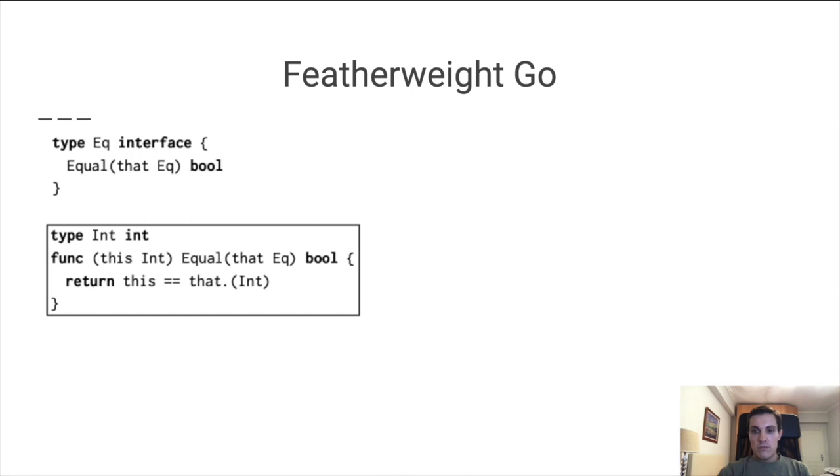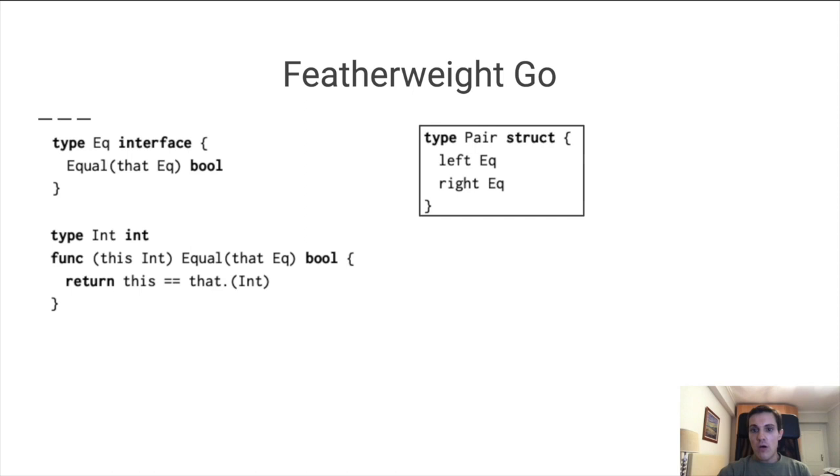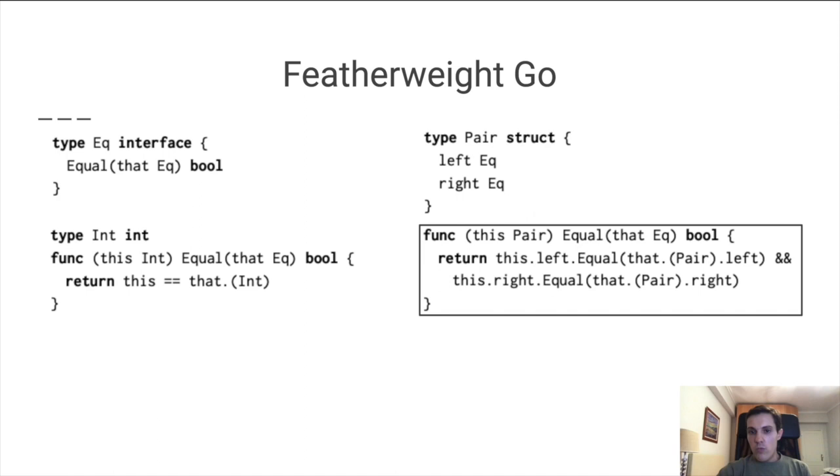We can also make new types have equality. For instance, we can define a pair type with a left and a right element. If we want to have an EQ on pair, we have the elements themselves implement EQ. Then we can define equality for pairs, the equal method, in this sort of expected point-wise way. Again, we need to cast the that parameter to a pair in order to access its left and right fields.